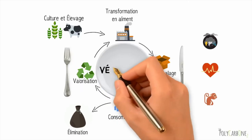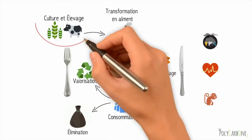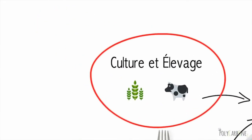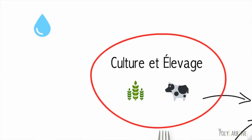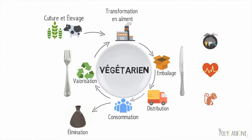Par exemple, remplacer sa portion de viande par une alternative végétarienne réduit l'impact environnemental relié à l'étape de production agricole. En effet, l'élevage requiert beaucoup d'eau, de terre et d'intrants chimiques pour produire la nourriture animale et est à l'origine de nombreuses émissions polluantes.